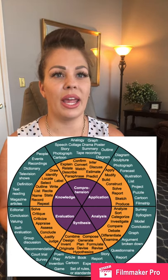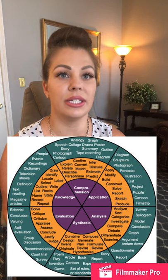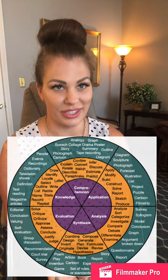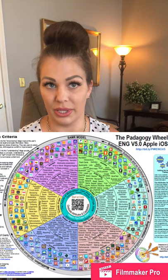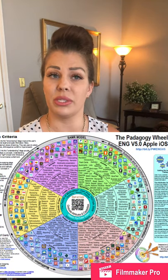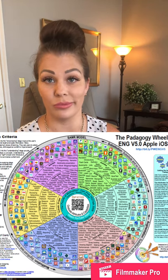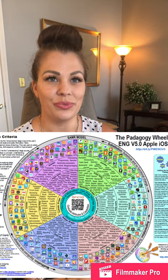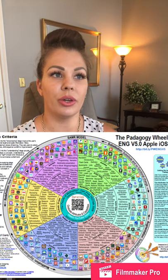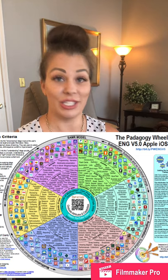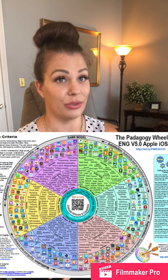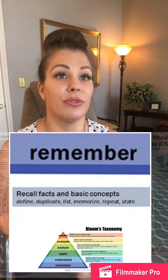Alan Carrington, a learning designer from Australia, took Bloom's Taxonomy Wheel and was able to match each category with different apps that would help to achieve each domain. We're going to go through a list of two apps for each domain to use about Bloom's Taxonomy.